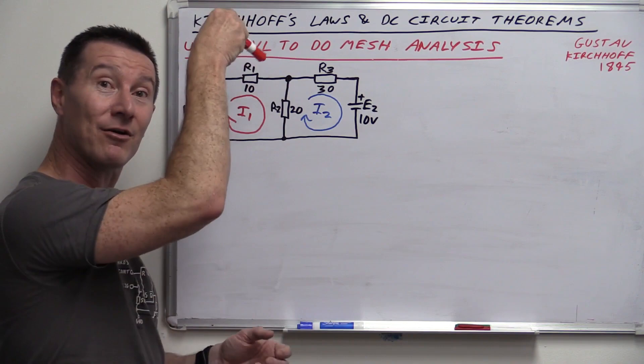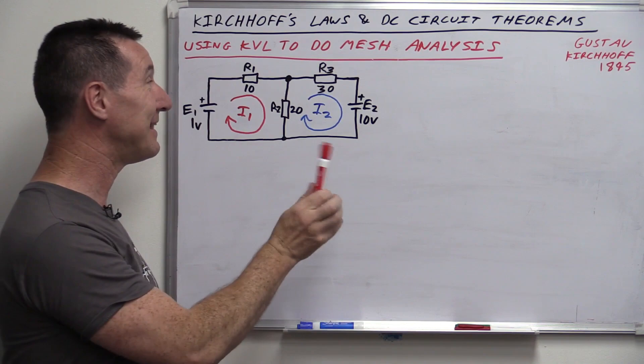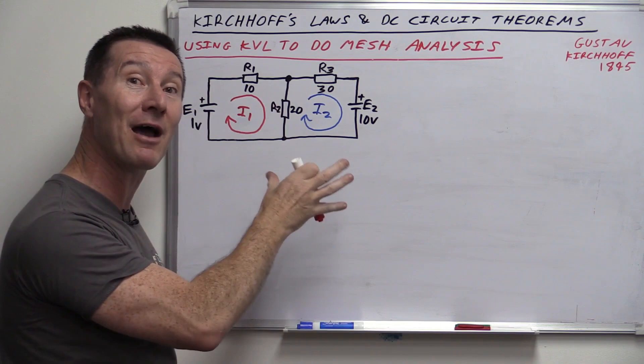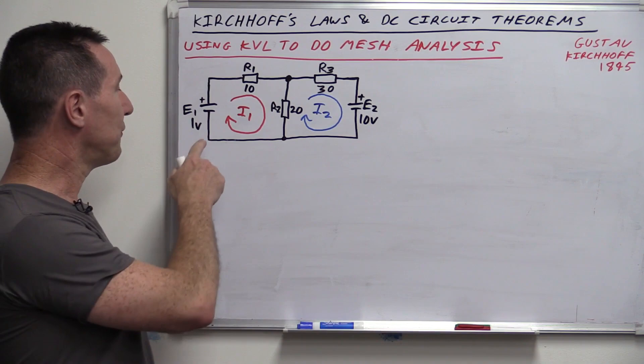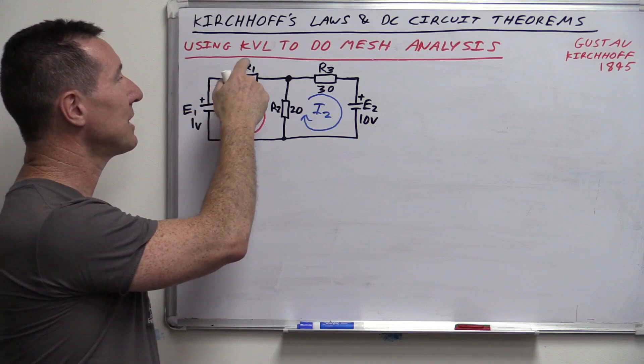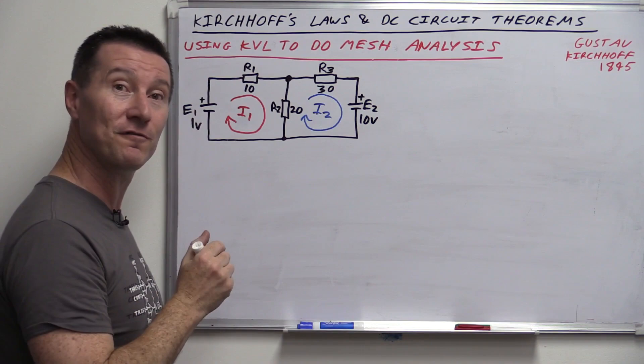The superposition theorem states: the current in any element is the sum of currents produced by each source acting independently, whilst the other sources are replaced by their internal resistances. What this means: if we want to solve the current through R2, we can do it by the sum of currents produced by each source acting independently. We start with E1, take out E2 and replace it with its internal resistance — a short circuit, since an ideal voltage source has zero internal resistance. An ideal current source would be replaced by an open circuit.